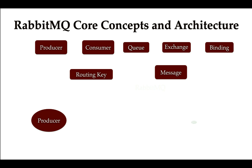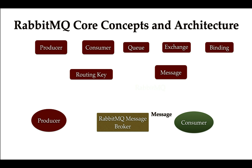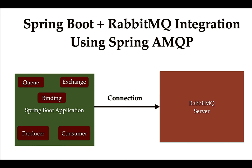In the RabbitMQ architecture we have multiple components: a producer that sends a message to the RabbitMQ broker, and a consumer that consumes that message from the broker. Next, we'll learn how to integrate RabbitMQ in a Spring Boot project using the Spring AMQP library.